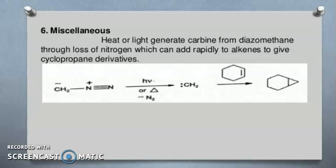Miscellaneous reactions. Heat or light generates carbene from diazomethane through loss of nitrogen, which can add rapidly to alkenes to give cyclopropane derivatives.